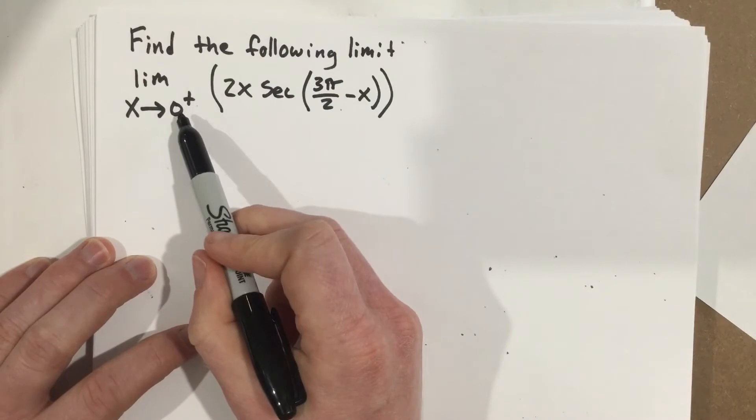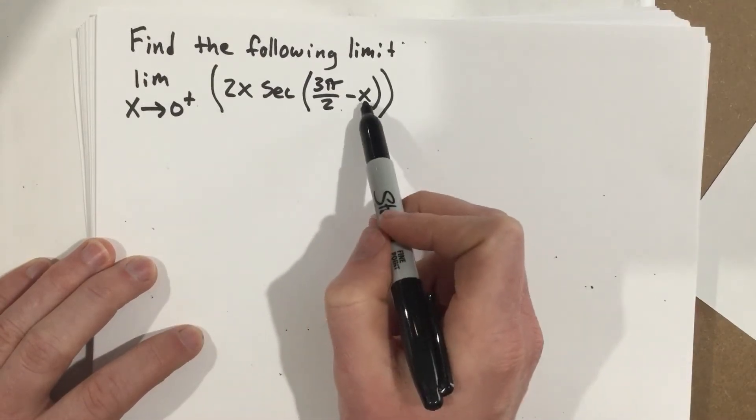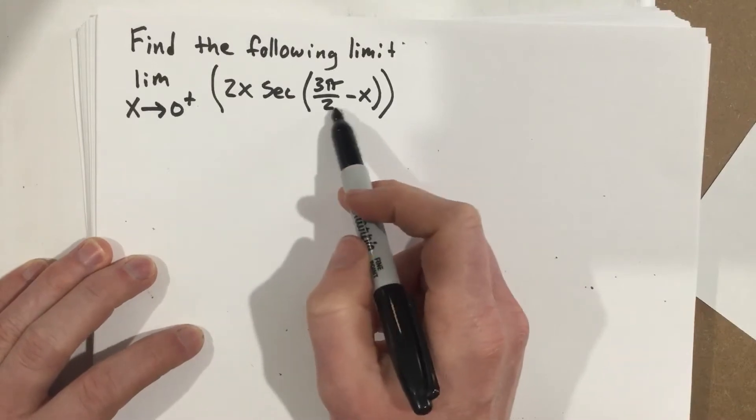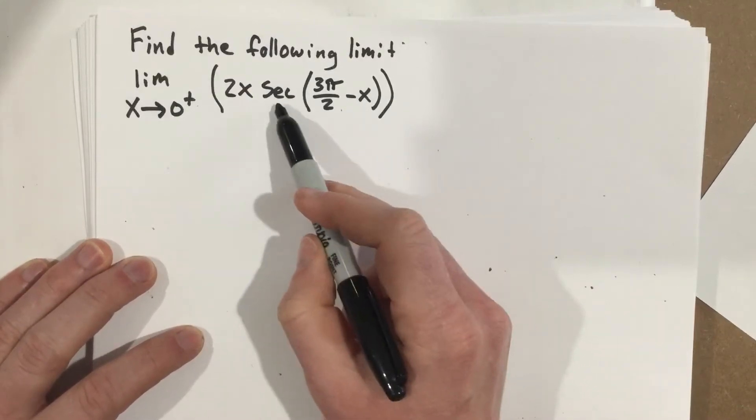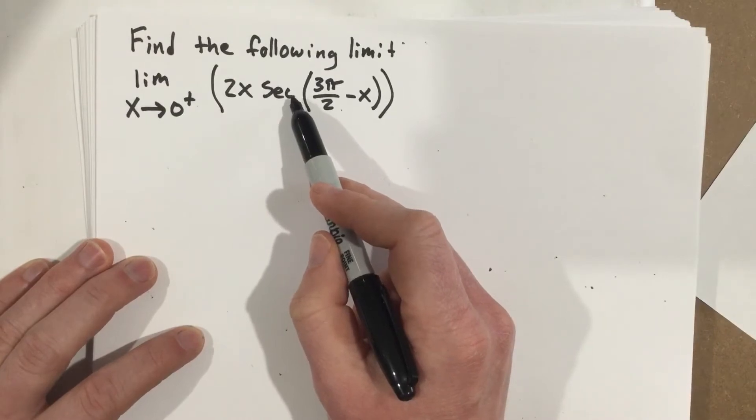First of all, we need to check to see, can we just plug 0 in and find the limit right away? So we plug in 0, 3π over 2 minus 0 is just 3π over 2. Secant of 3π over 2. I know secant is 1 over cosine.